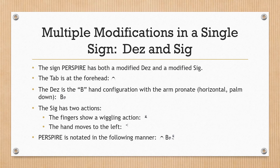Multiple modifications in a single sign — DES and SIG. The sign PERSPIRE has both a modified DES and a modified SIG. The TAB is at the forehead. The DES is the B hand configuration with the arm pronate, palm down. The SIG has two actions: the fingers show a wiggling action, and the hand moves to the left. PERSPIRE is notated in the following manner.